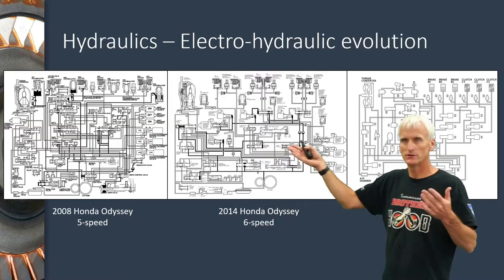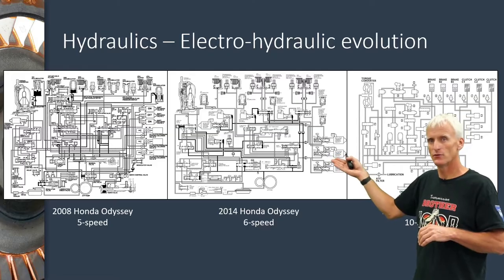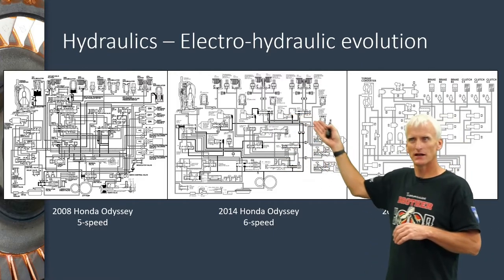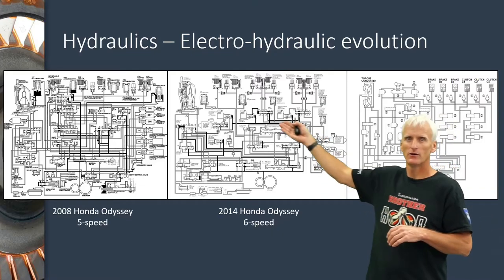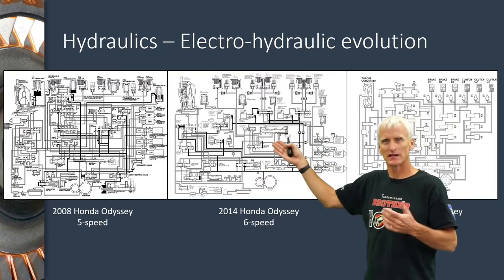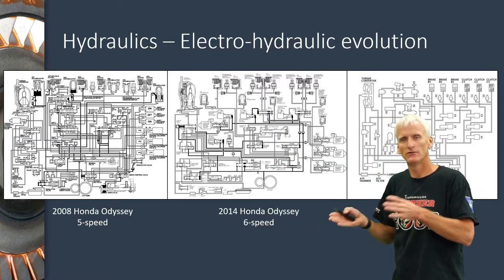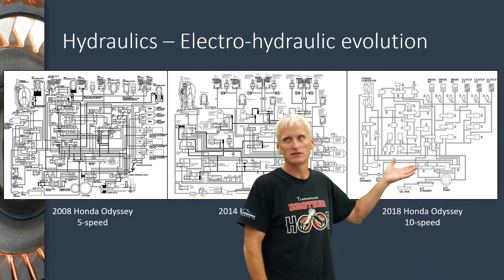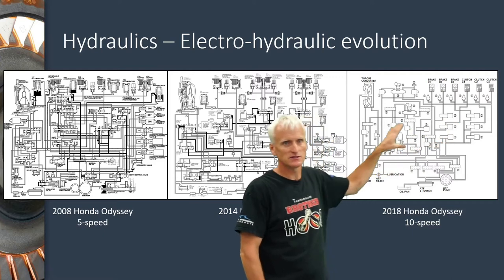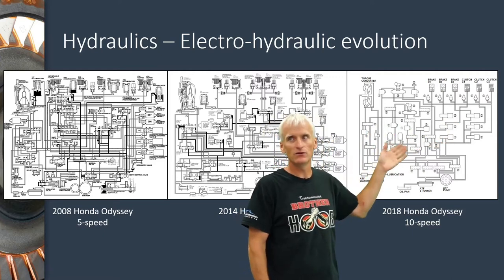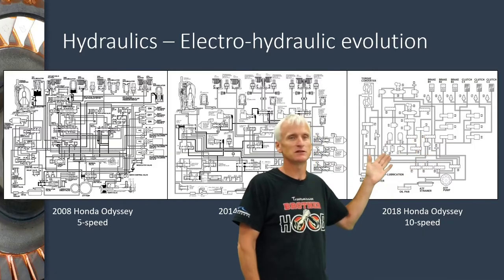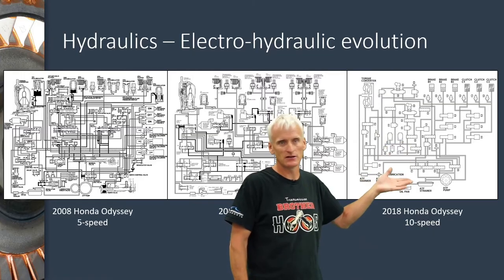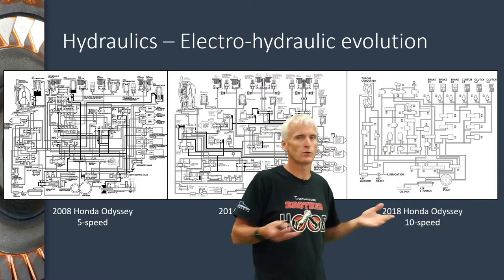That was 2008, 12 years ago. Now looking at the 2014 — six years ago — this is a six-speed, so they've added one gear, and we've still got solenoid control and more clutches, but the hydraulic schematic actually got simpler. They moved some of the responsibility for the valving over to the solenoids and the electronic side. This 10-speed example has tons of solenoids — all those little canisters in the middle — and very few valves. The 10-speed has far fewer valves than the five-speed, and the hydraulic schematic is a lot simpler, even though the transmission is way more complex.